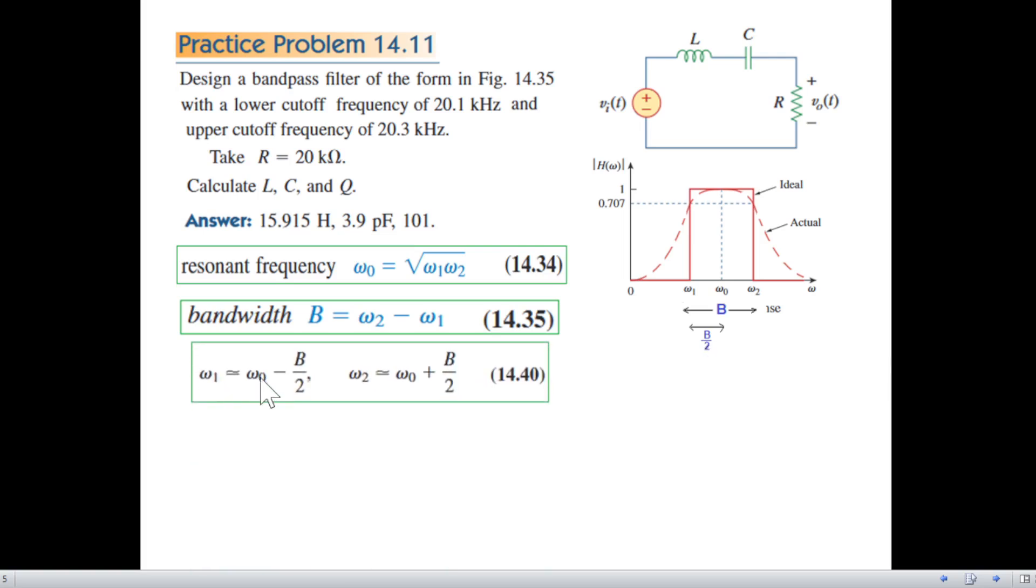Omega 1 is omega naught minus this value B by 2, and similarly omega 2 is omega naught plus this value here, this is also B by 2. So these two formulas.